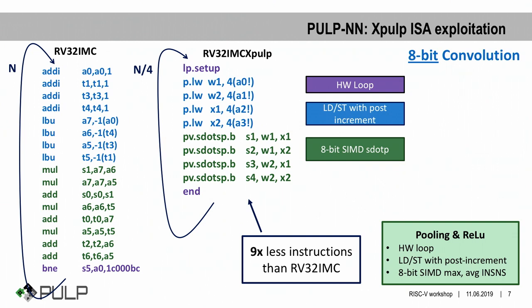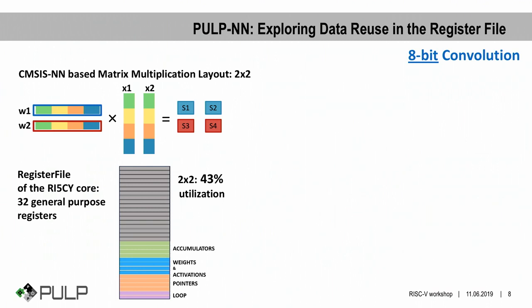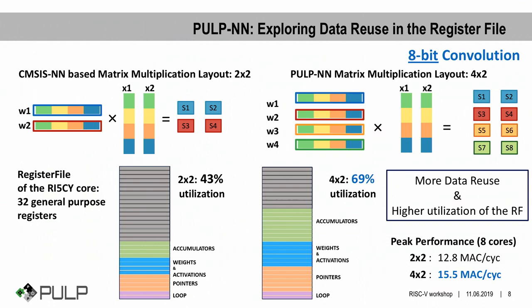Similar techniques are used to speed up pooling and ReLU functions. For convolution, we noticed further margin to increase performance: the previous solution uses a 2x2 matrix multiplication layout, which is only 43% efficient in terms of register file utilization. We can increase utilization by exploring more data reuse at the register file level. By fetching two additional subsets of weights from L1 memory and keeping elements in the register file, we compute more output pixels in parallel. This brings register file utilization to 69%, directly improving performance with a further 30% gain.